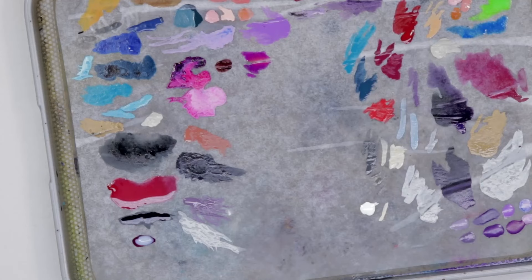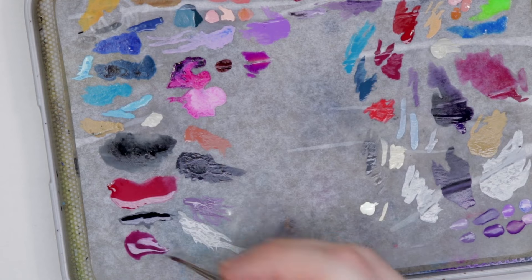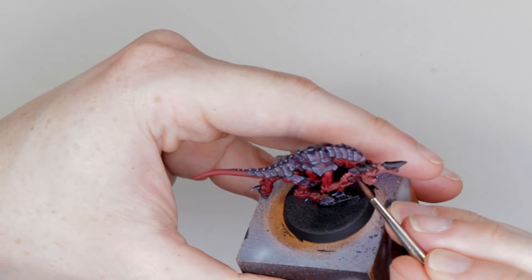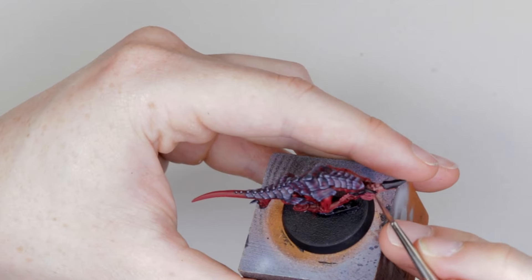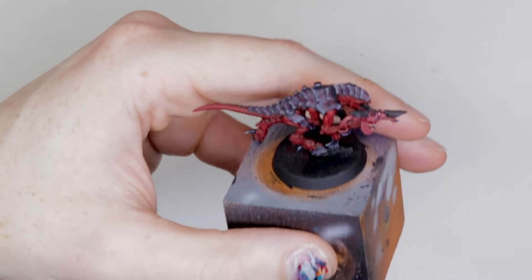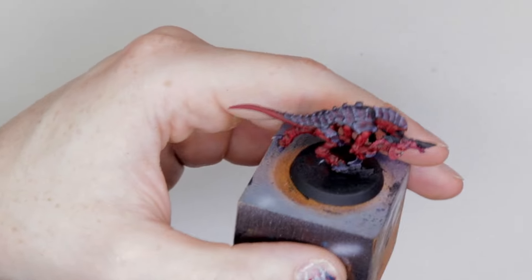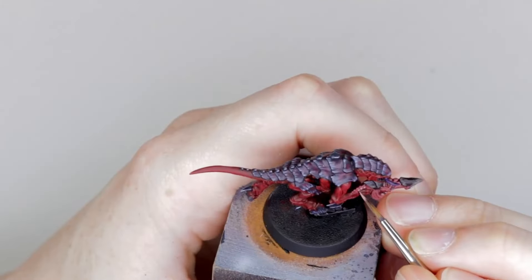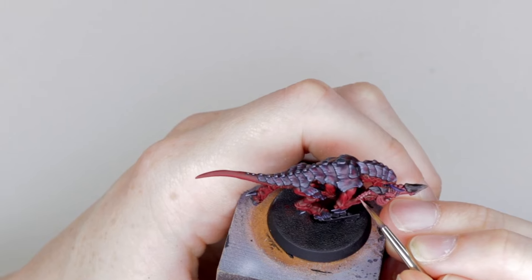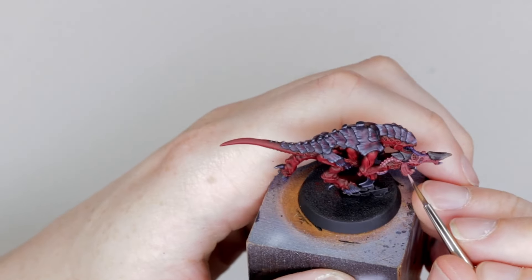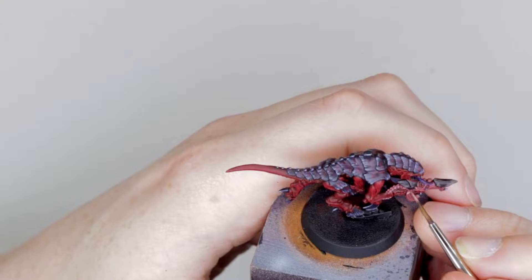Then to give some definition to those fleshy bits, we're going to grab Volupus Pink and thin it down with some Contrast Medium. We're going to wash it over all of those fleshy bits. So anything we've painted in Bugman's Glow, we're going to tint it a bit more pink and also get some of that deeper pink into the crevices, into the detailed parts of the model. It just adds a bit of definition and pulls the color a bit closer to what we've got going on with the skin as well. To finish that off, we're going to grab Browned Rose by Vallejo. We're going to highlight those fleshy areas on the points in the model where we think that the most light would hit, making sure some of that Bugman's Glow and Volupus Pink is still showing through, but that we've got those three colors clearly on there.